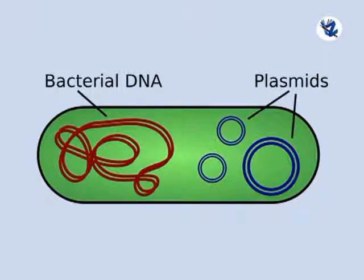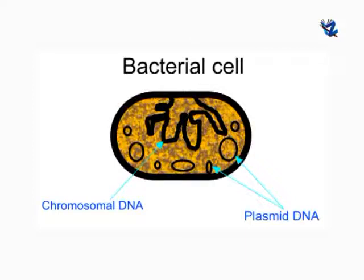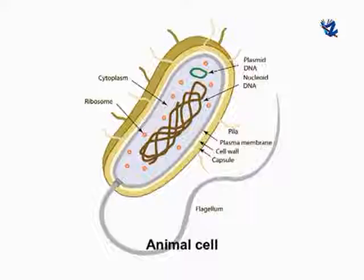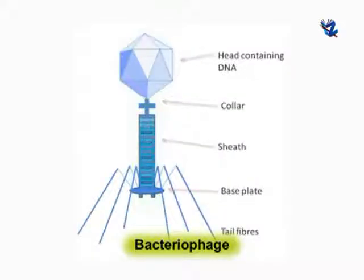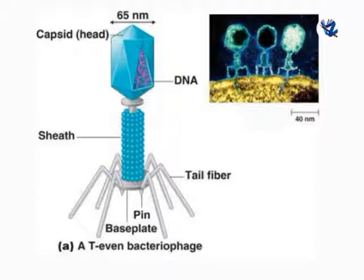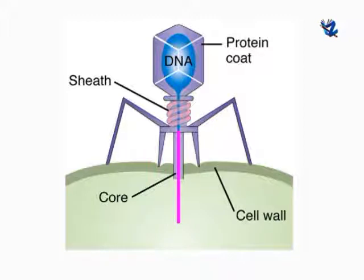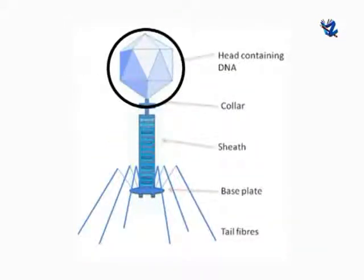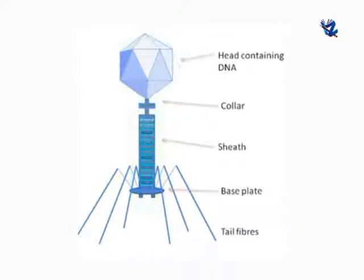Plasmids are small, extra-chromosomal, double-stranded, circular forms of DNA that replicate autonomously. They are naturally found in bacteria, yeast, and occasionally in plant and animal cells. A bacteriophage is a virus that infects bacteria; it consists of an outer protein capsid enclosing the genetic material. Larger DNA molecules can be injected into the host bacterial cell by bacteriophages. The portion of phage DNA required for packing it in a capsid is retained, and the virulent portion is deleted so that the desired DNA fragment can be loaded.